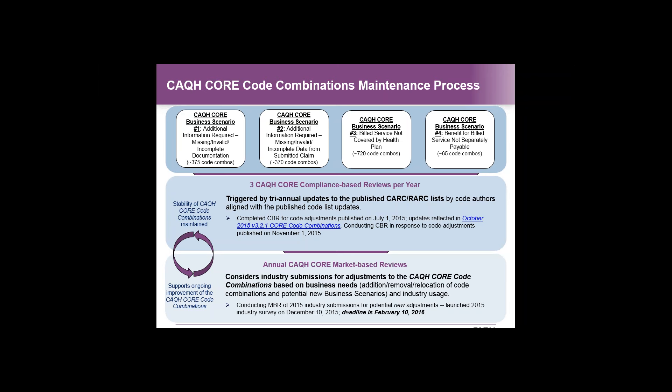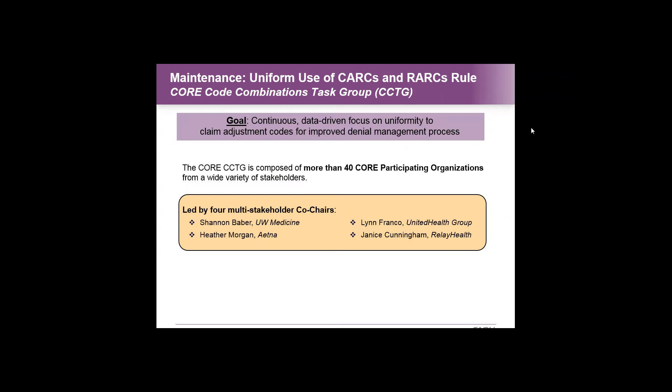We'll be walking through that process through much of the rest of the call. The core code combination task group manages this process. Its mission is to maintain core code combinations and business scenarios, and it's composed of over 40 different core participating organizations from a wide variety of stakeholders, including four co-chairs: a provider from UW Medicine, two health plans represented by Aetna and United, and a vendor, Janice Cunningham from Relay, representing the vendor community. This is a cyclical, ongoing maintenance process defined and supported by the rule itself.